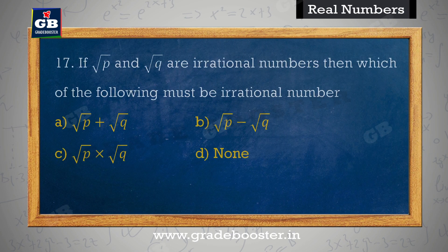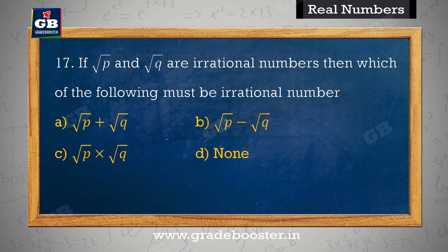If root p and root q are irrational numbers, then which of the following must be irrational? Nimn mein se kaunsa irrational number hona chahiye? A. √p + √q, B. √p - √q, C. √p × √q, D. None.